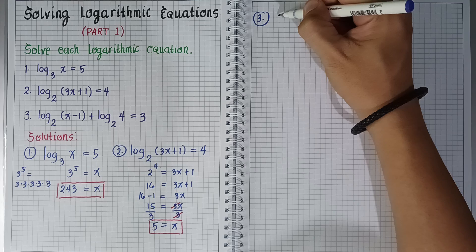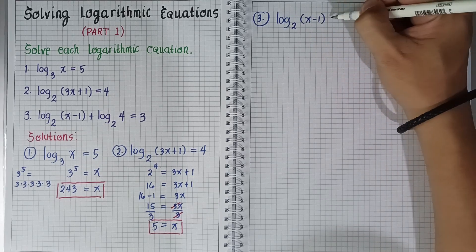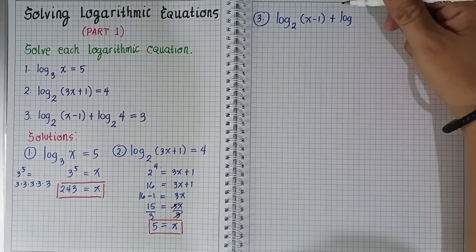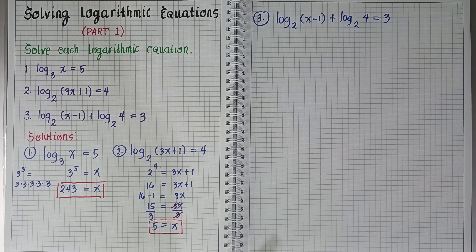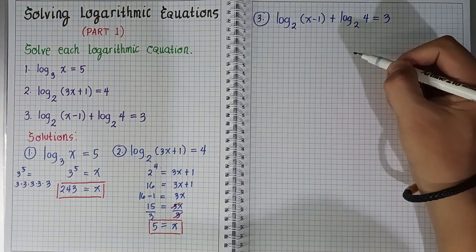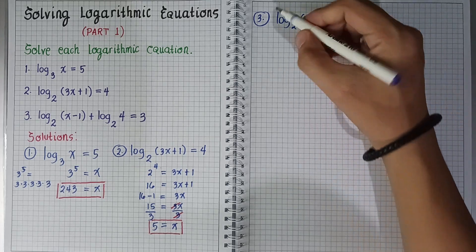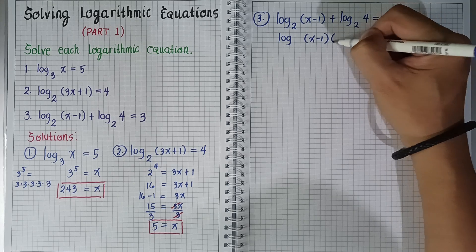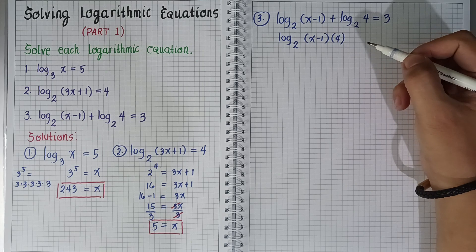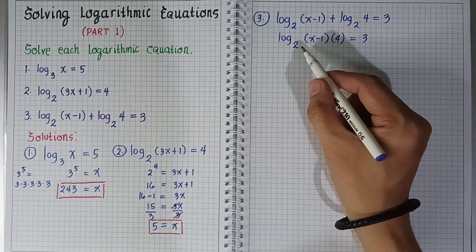For number 3, we have the logarithm of quantity (x minus 1) to the base 2, plus the logarithm of 4 to the base 2, equals 3. As I mentioned earlier, we apply the different properties of logarithms if necessary. Here, the product property is applicable — we combine them into the logarithm of quantity (x minus 1) times 4, to the base 2. Then express in exponential form.